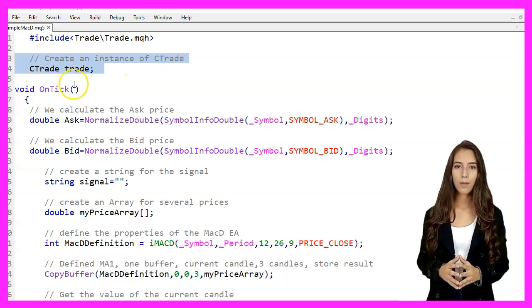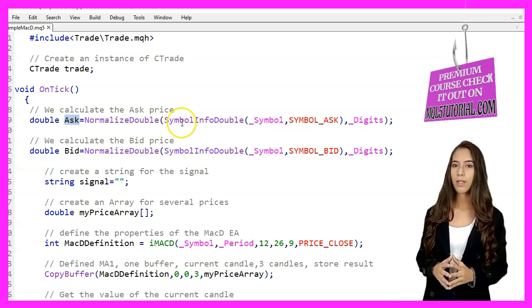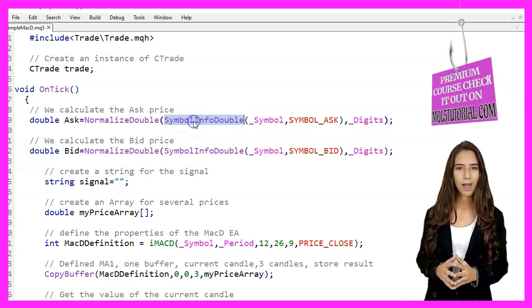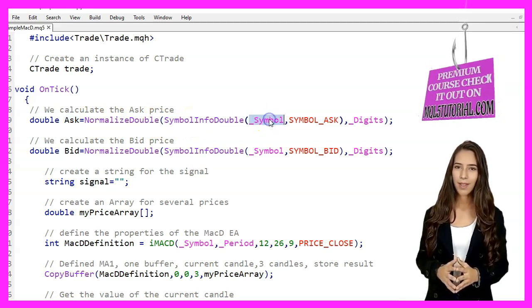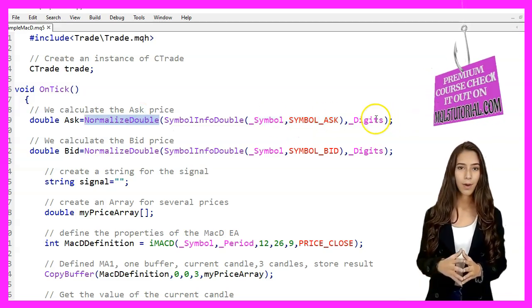In the OnTick function, we begin by calculating the ask price. We use the SymbolInfoDouble function to get the current ask price for the symbol and normalize it to the correct number of digits using NormalizeDouble.